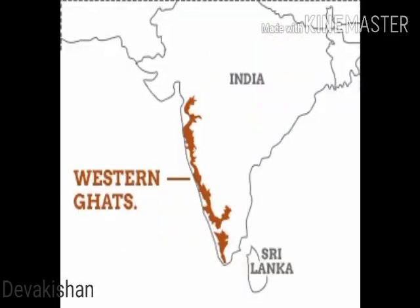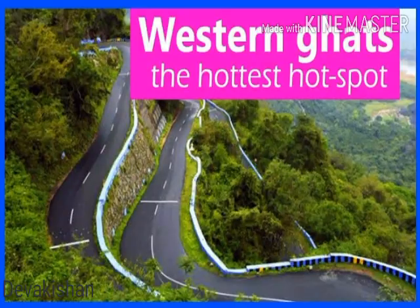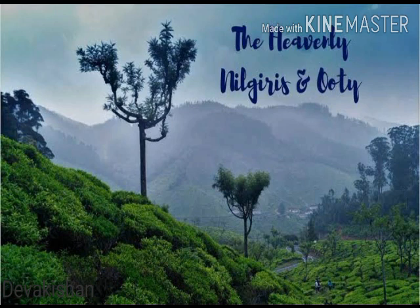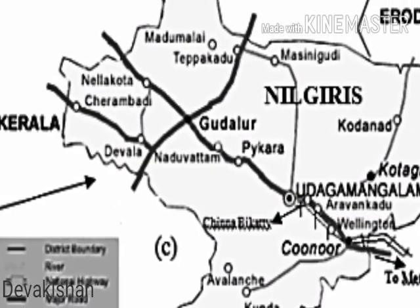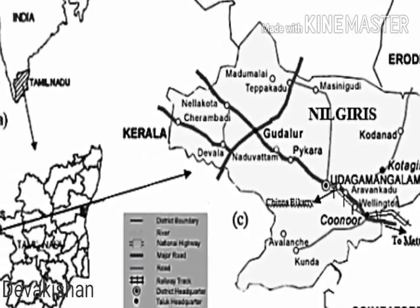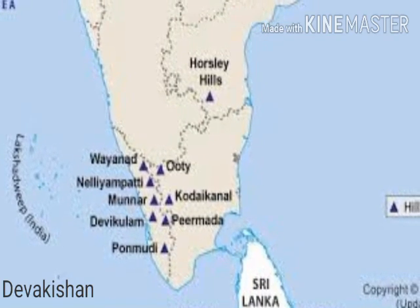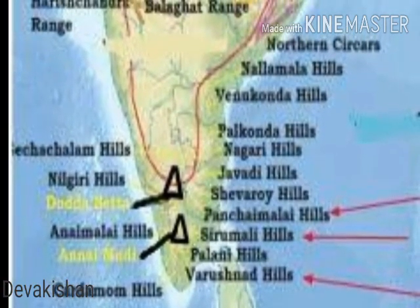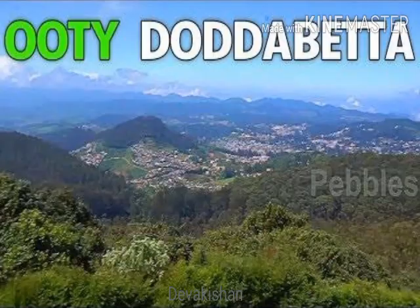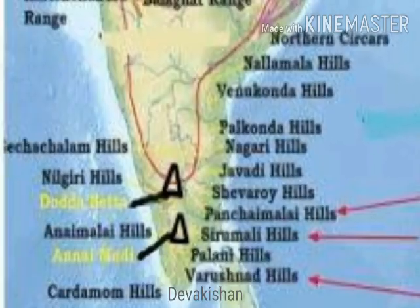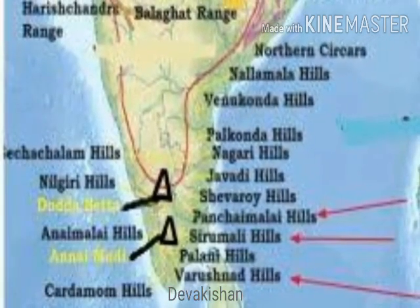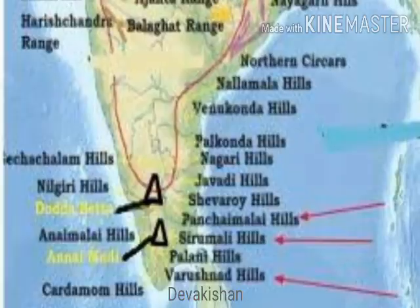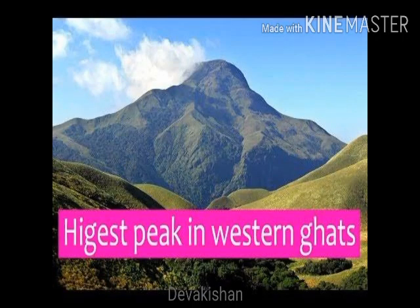The Western Ghats lie parallel to the west coast and are continuous with a few passes as gateways to the coastal plains. The Western Ghats extend for 1,600 km and are higher than the Eastern Ghats. Near Gudalur, the Nilgiris join the Western Ghats and rise to over 2,000 meters. The famous hill station Udhagamandalam, popularly known as Ooty, is located in the Nilgiris. Doddabetta at 2,637 meters is its highest peak. Western Ghats include the Palani Hills (Tamil Nadu), Annamudi and Cardamom Hills (Kerala). Annamudi at 2,695 meters in the Anaimalai Hills is the highest peak in South India.